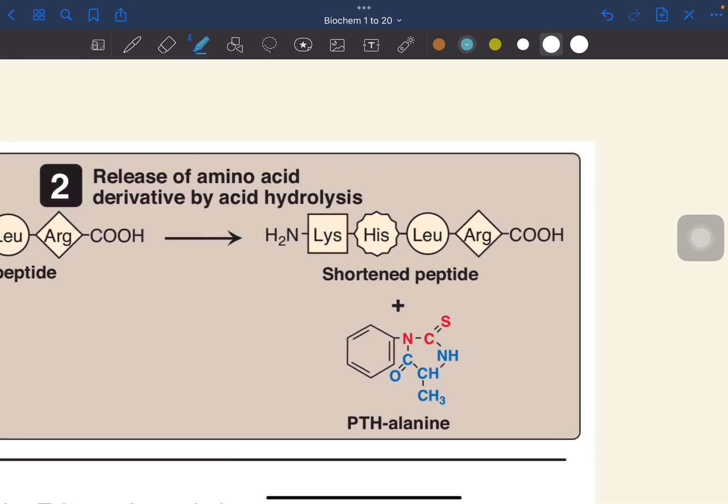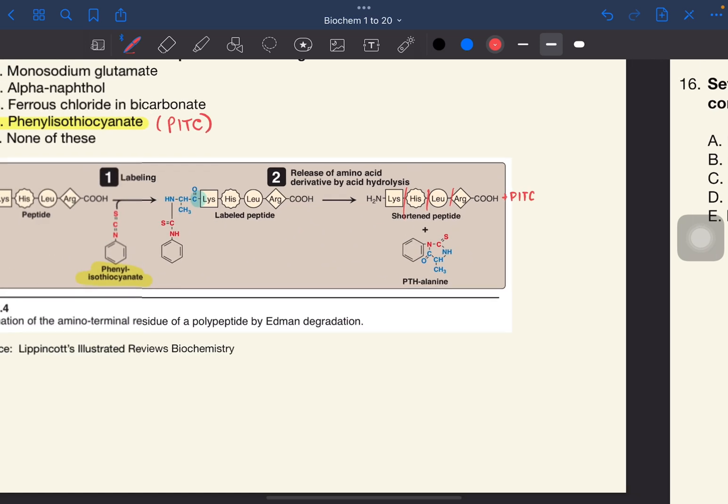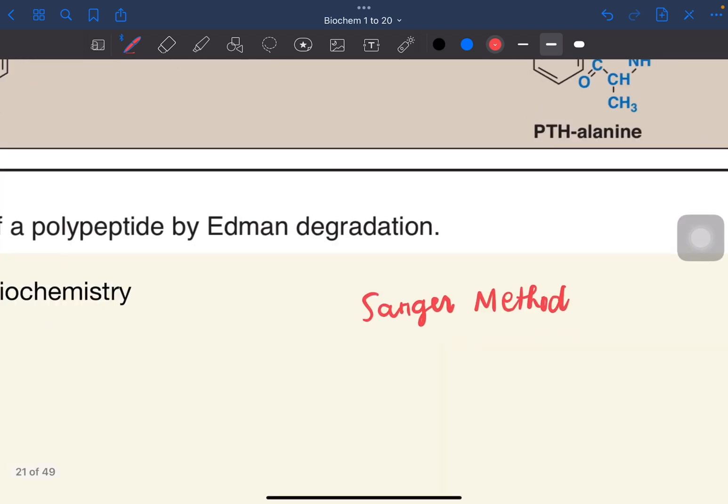The lab analyst can repeat the steps until the peptide is exhausted and all amino acids are identified. We can still add PITC to this one until it's chopped, and then again and again. Another method to identify amino acid residues is the Sanger method. We use 2,4-dinitrofluorobenzene.